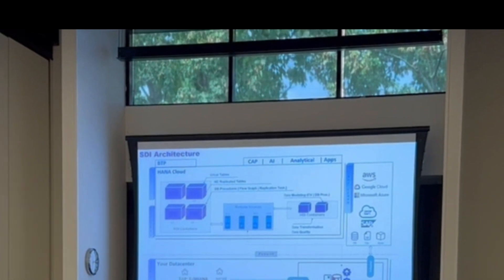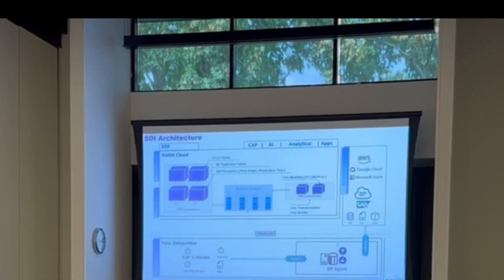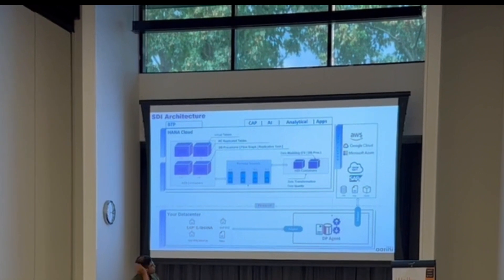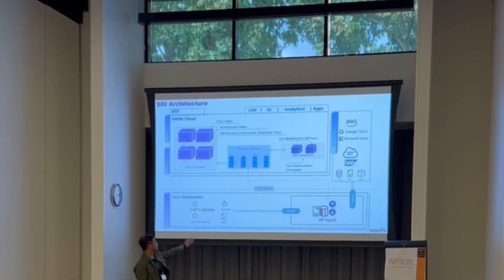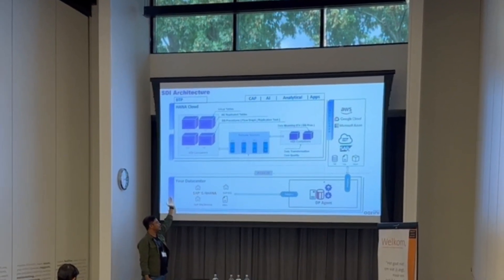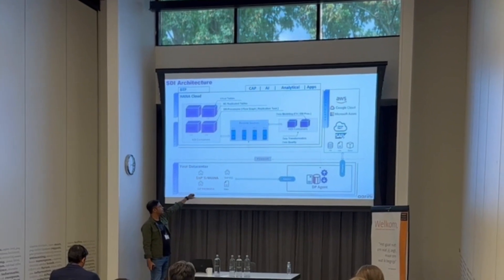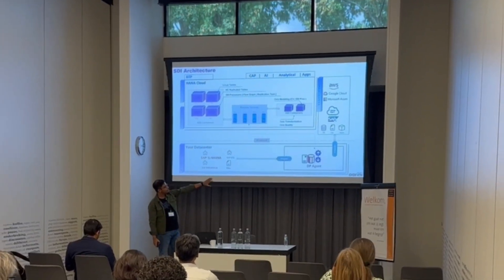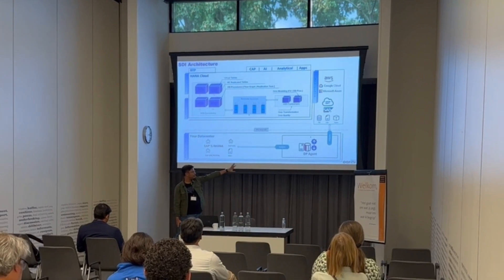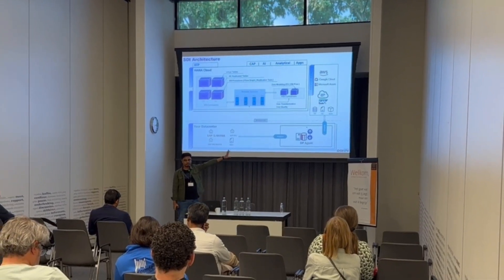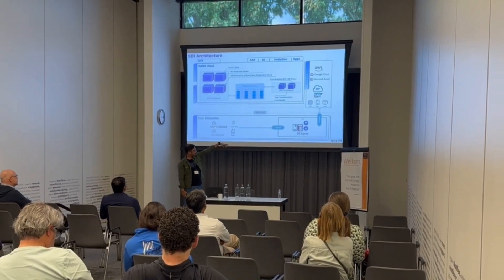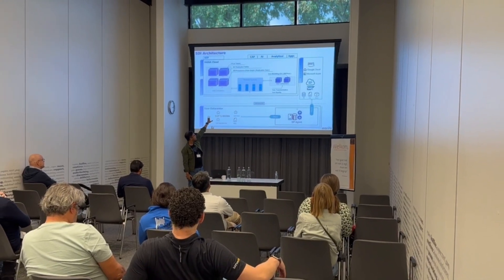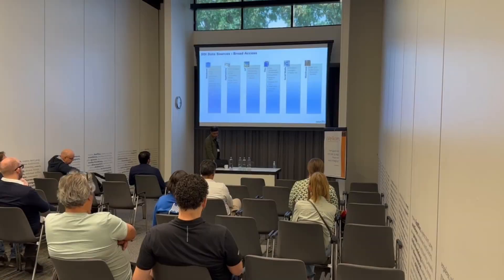Moving into the DP server where Smart Data Integration operations happen: your on-premise systems are generally behind your firewall, be it S/4HANA or ECC systems. We have different adapters and a data provisioning agent provided by SAP itself. You install it and bring the data into your HANA Cloud.